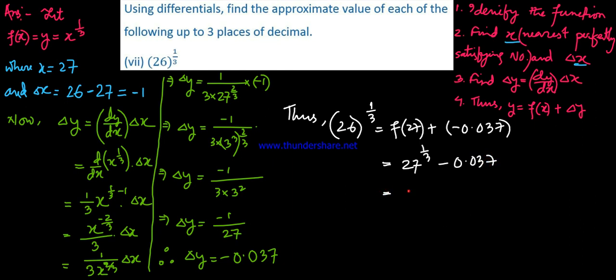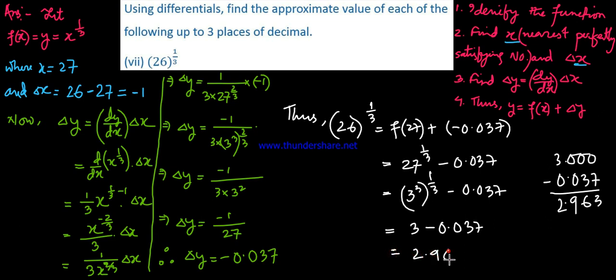27 to the power one by three equals 3. So this is 3 minus 0.037. Three minus 0.037 equals 2.963. So the answer is 2.963 to three decimal places.